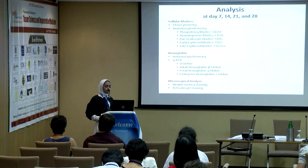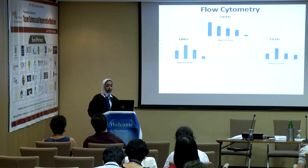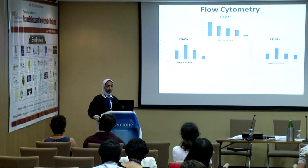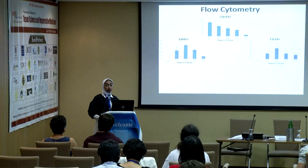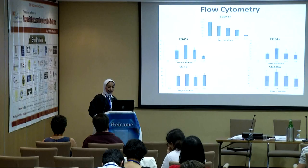Flow cytometry showed a decrease in the pluripotency marker SSEA4, while the hematopoietic markers CD34 and CD45 showed an increase by day seven, peaking by day 14. By day 14, 40% of the population was positive for CD34 and more than 70% was positive for CD45. CD71 and CD235A — glycophorin A — then started to increase after the hematopoietic markers and continued increasing throughout the culture period.